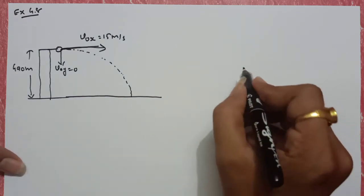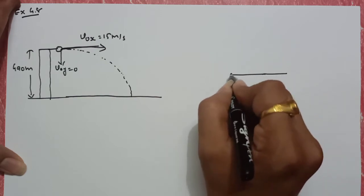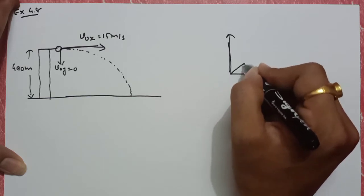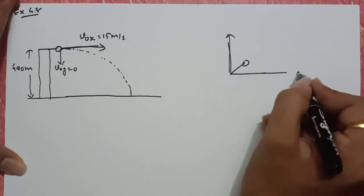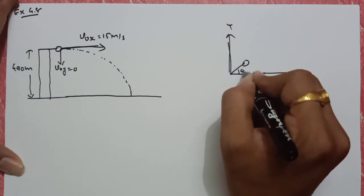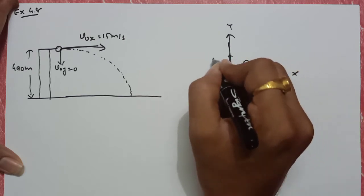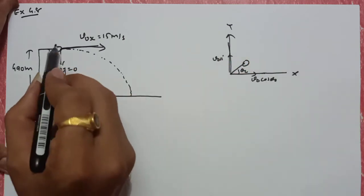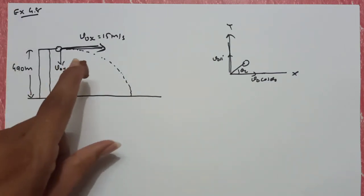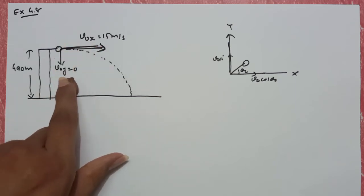और अब जो previously हमने theory पढ़ी थी, उसमें हम object को angle पर throw करते थे — तो यह between x and y था, इसलिए यहाँ पे आपको x का भी component मिला था और y का component भी मिला था। But यहाँ पे हमने directly x-axis पर throw किया है, so whatever initial velocity is only of the x-axis, y-axis की velocity नहीं होगी।